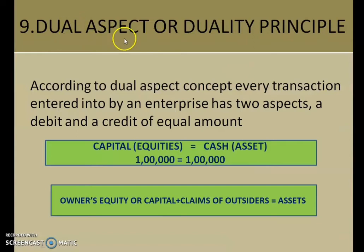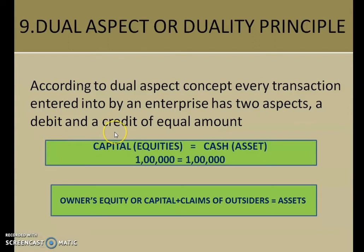Next is the dual aspect or duality principle. Our accounting work is based on the dual aspect. According to the dual aspect, every transaction entered into by an enterprise has two aspects: a debit aspect and a credit aspect of equal amount. In accountancy, we have two sides — the debit side and the credit side — and both sides must be equal. One formula to remember: capital or equities should be equal to your assets. So if capital is 1 lakh, your asset side should also show 1 lakh. Your debit and credit must show equal amounts.